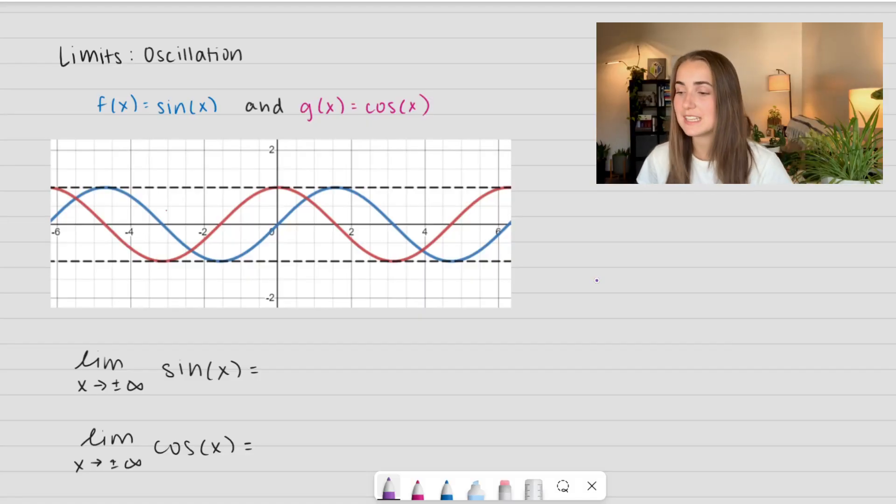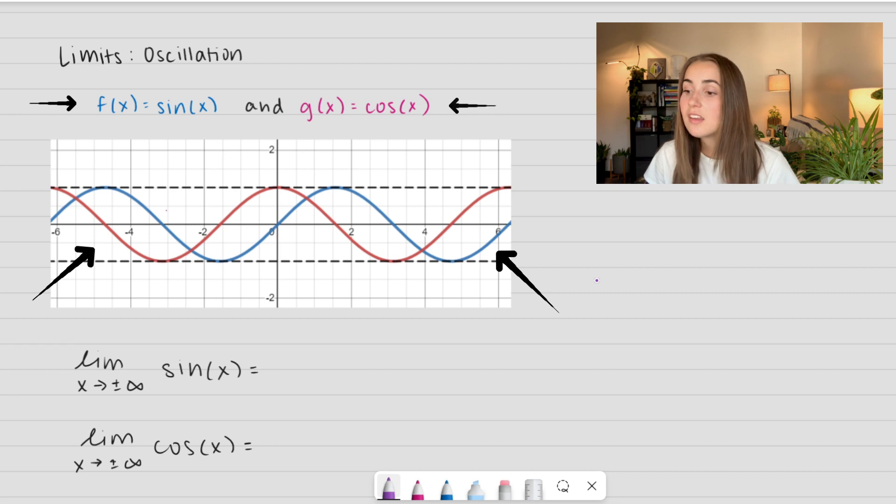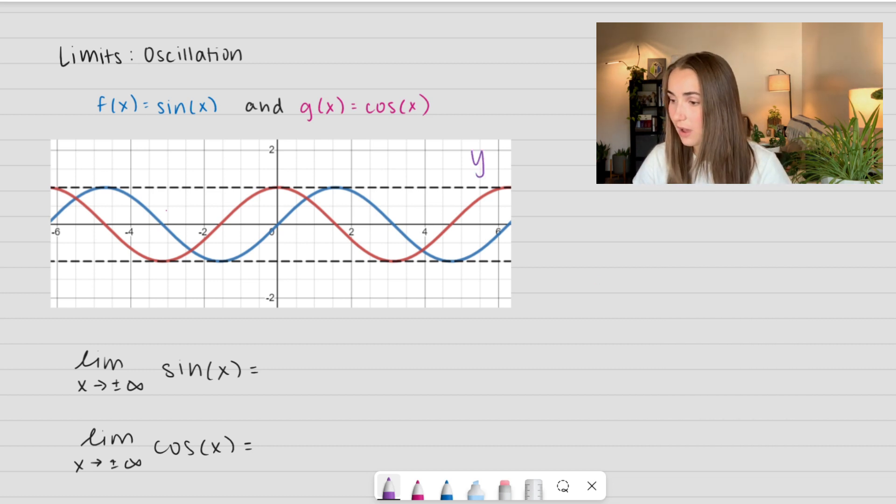Of course, we have a visual representation to see. We have the blue function is sine of x and the red function is cosine of x. So what it means to be oscillating is that it's continuously changing between two values. This one is always stuck between y equals positive 1 and y equals negative 1. It's always going to be oscillating between those two values.